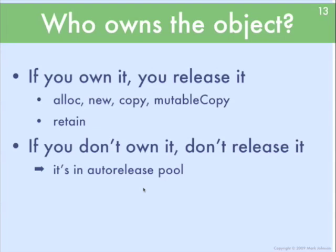If you have a reference to an object which you don't own — i.e., you didn't create it yourself — then it's already in an auto-release pool. If it's in an auto-release pool and you release it yourself, it's possible it will get released twice: the retain count goes to zero, the object gets deleted, and then it gets released again by the auto-release pool, which would cause a crash.